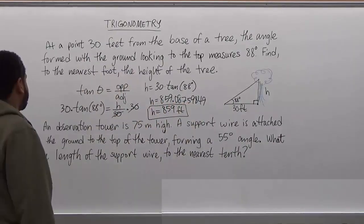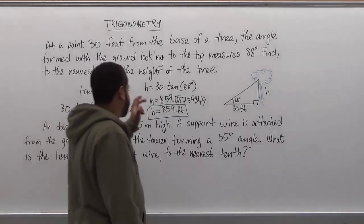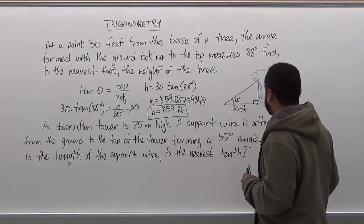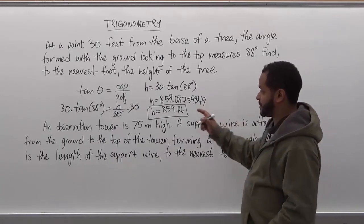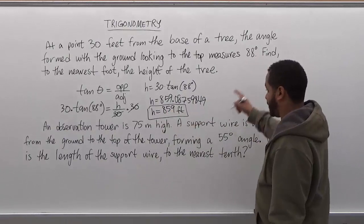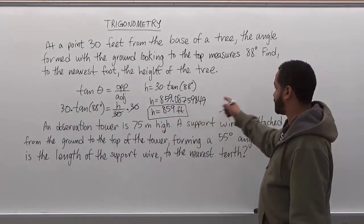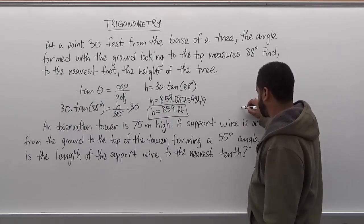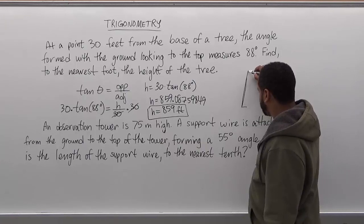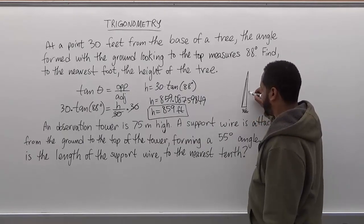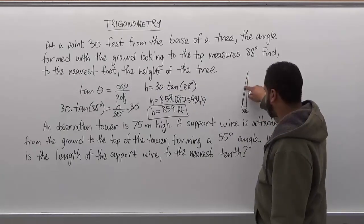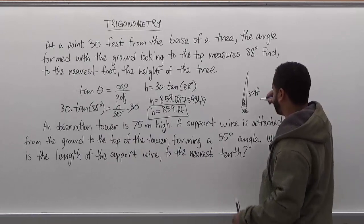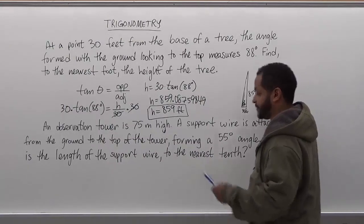That's our solution for the first problem. Looking back, the height of the tree is 859 feet. Our initial illustration may not be to scale, but it's useful for identifying the sides of the triangle. For a more accurate picture: since it's only 30 feet from the base and the height is much taller, the angle of 88 degrees is very close to 90, so it's a very short distance along the ground and a very long way up.